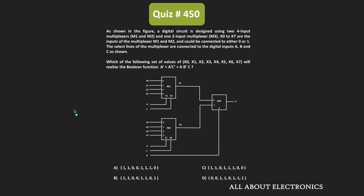Hey friends, welcome to the YouTube channel All About Electronics. So in this question, we have been given this digital circuit and as you can see, it consists of two 4x1 multiplexers and one 2x1 multiplexer.